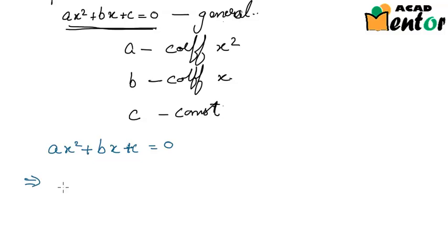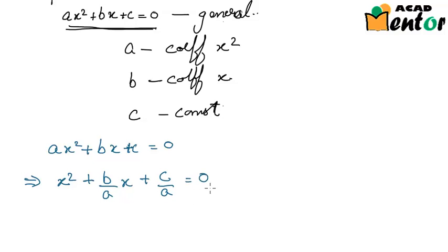Dividing gives us X² + (B/A)X + C/A = 0. This is the equation where the coefficient of X² is 1, which is a perfect square. So using this equation we will proceed further.